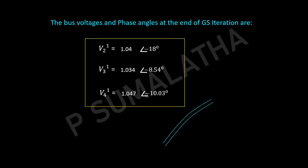So the required bus voltages at the end of the first GS iteration for Case 1 are: V2 = 1.04∠−18°, V3 = 1.034∠−8.54°, and V4 = 1.047∠−10.03°.